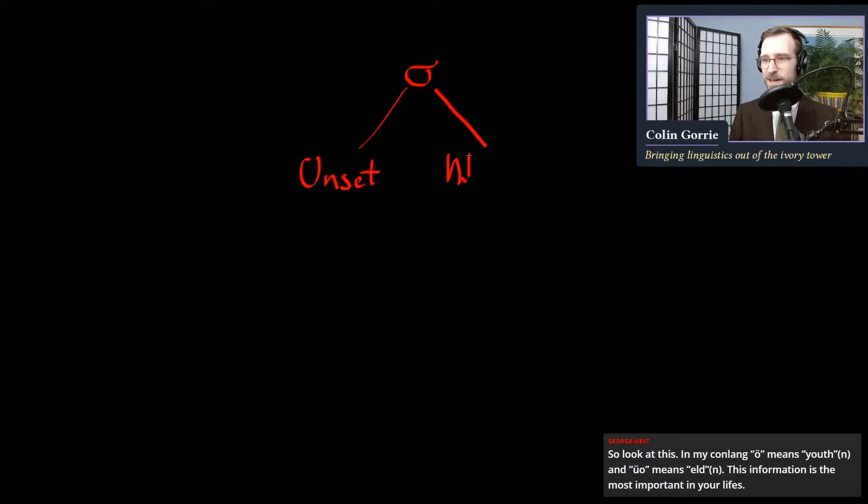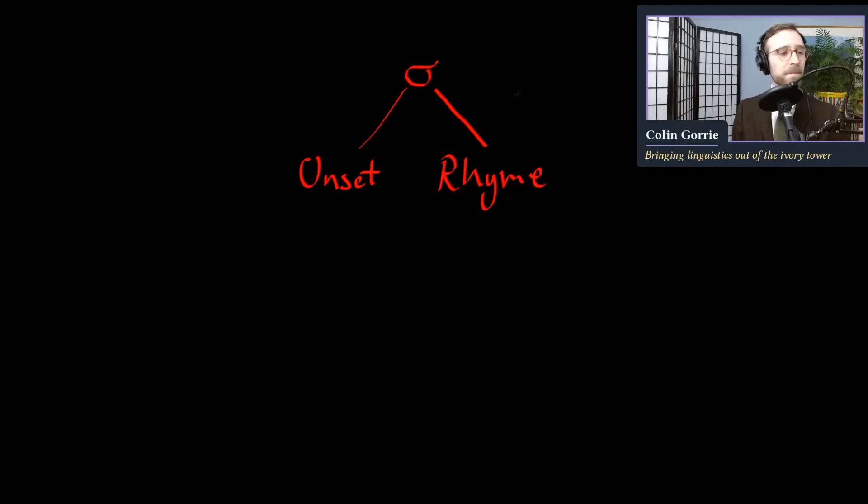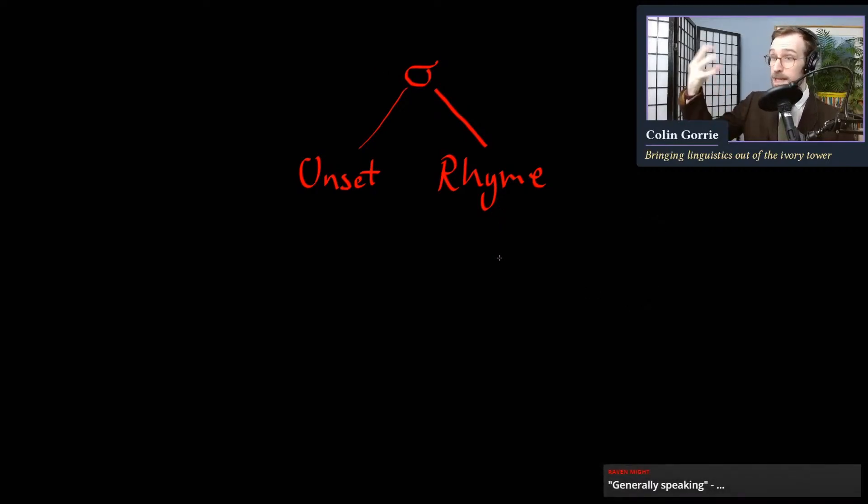Onset. That's an R, believe me. Rhyme. You know what, that's not an R. I can't lie to you. Rhyme. You'll also see it spelled R-I-M-E sometimes. So the onset and the rhyme are the two components of a syllable. The rhyme is mandatory.